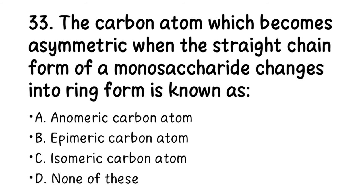Number 33. The carbon atom which becomes asymmetrical when the straight-chain form of a monosaccharide changes into ring form is known as: A. Anomeric carbon atom, B. Epimeric carbon atom, C. Isomeric carbon atom, D. None of these. The right answer is the anomeric carbon atom.